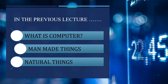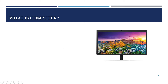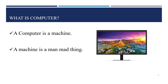Let's see what we studied in the previous lecture. First, we studied what is a computer — the definition of a computer. Second, man-made things and natural things. These three points we learned in the previous lecture. A computer is a machine, and machine is a man-made thing. A computer is an electronic machine — without electricity the computer cannot start. The computer is a man-made thing because it is made by man.